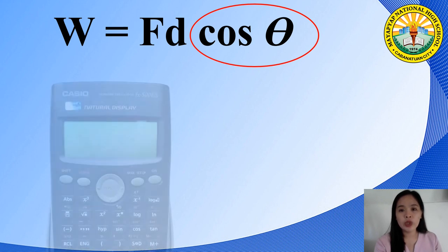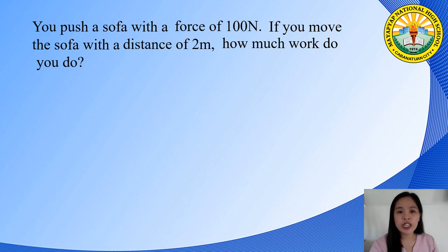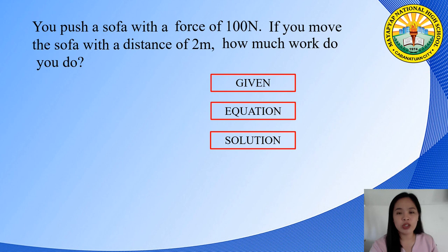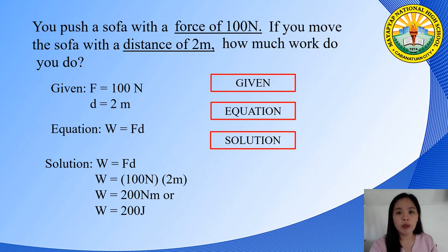In solving this kind of word problem, we use a scientific calculator. For example: you push a sofa with a force of 100 Newtons. If you move the sofa a distance of 2 meters, how much work do you do? Identify the given, determine the equation, and write the solution. The given are: force = 100 N and distance = 2 m. The equation is W = F × D. Substituting: W = 100 N × 2 m = 200 Newton-meters, or 200 Joules.